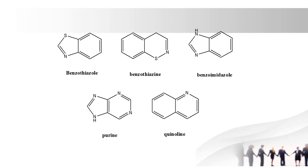Next one is purine. Purine basically contains the rings pyrimidine and imidazole. Caffeine and its derivatives contain the purine ring.